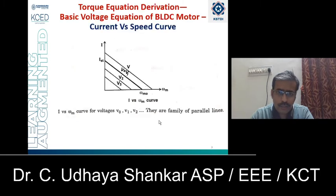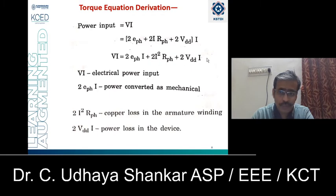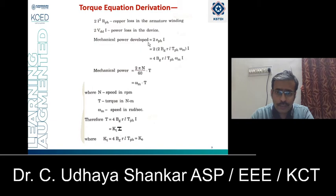After deriving the current expression and the current versus speed curve, we proceed with the torque equation derivation. Since we know the value of current, it is easy to find the torque expression. Power input equals V·I. Substituting V = 2·E_phase + 2·I·R_phase + 2·V_DD for the BLDC machine and multiplying through by I, we get several terms. The term 2·E_phase·I represents the mechanical power being converted, and 2·I²·R_phase represents the copper loss. Substituting the expression for E_phase gives: mechanical power = 4·B_G·R·L·T_phase·ω_m·I.